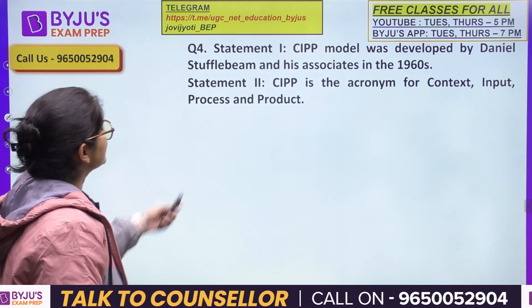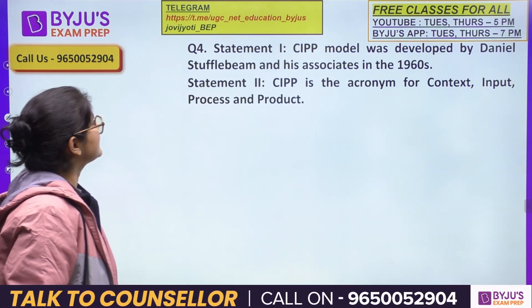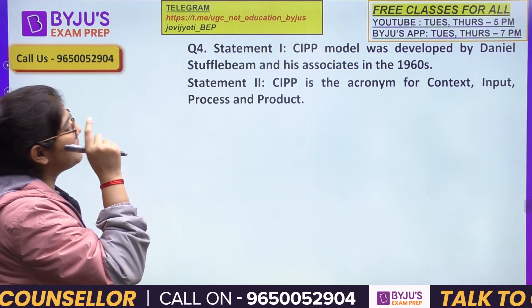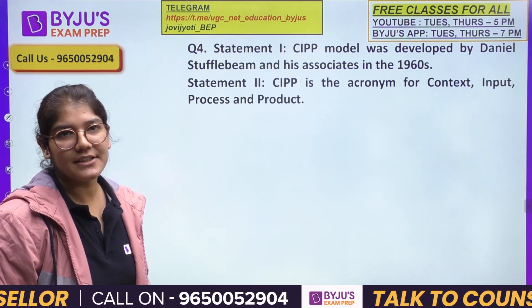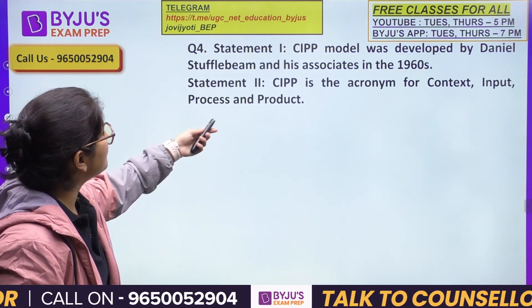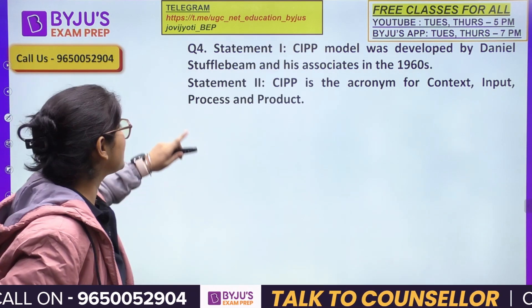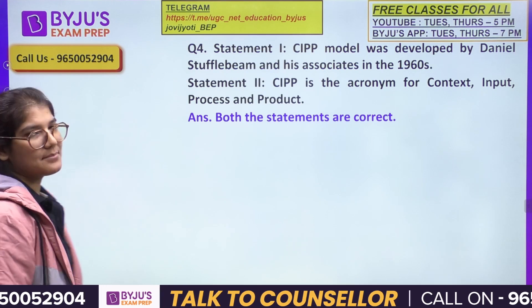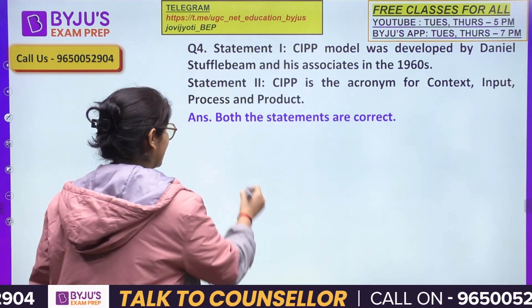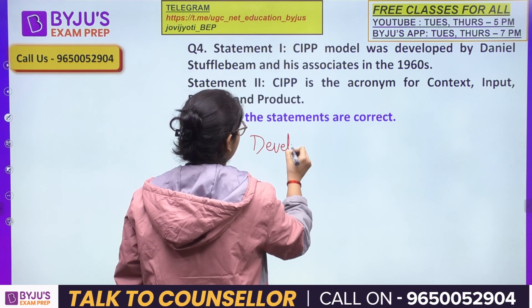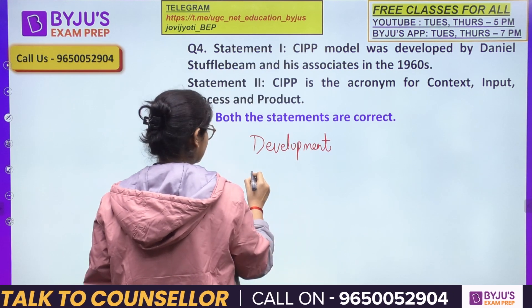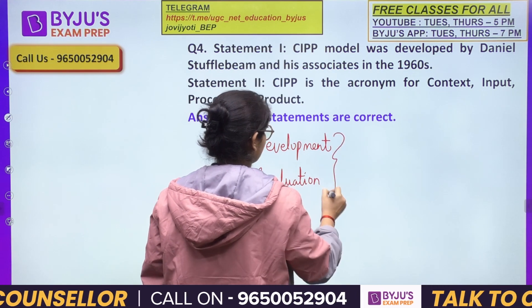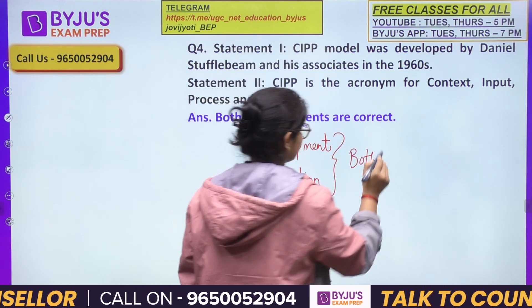Next question: Statement one — the CIPP model was developed by Stufflebeam and his associates in the 1960s. Statement two — CIPP is the acronym for Context, Input, Process, Product. This is a straightforward question. The CIPP model is used for curriculum development as well as curriculum evaluation.